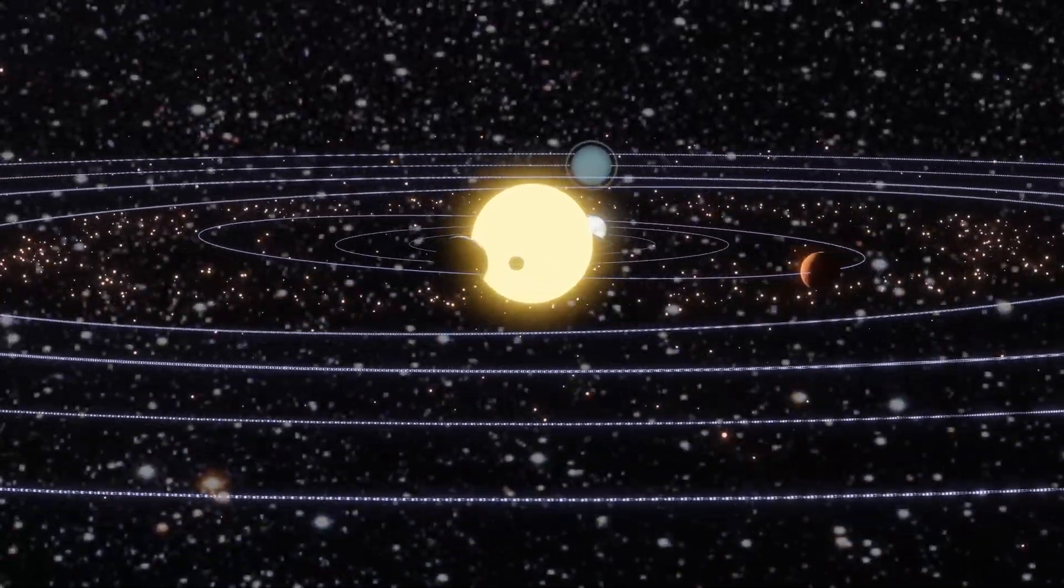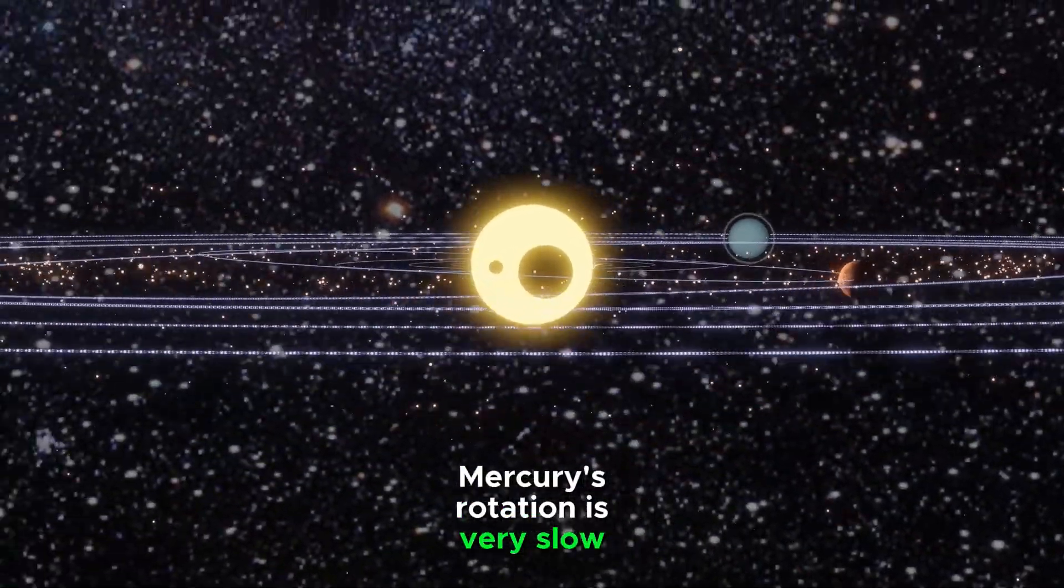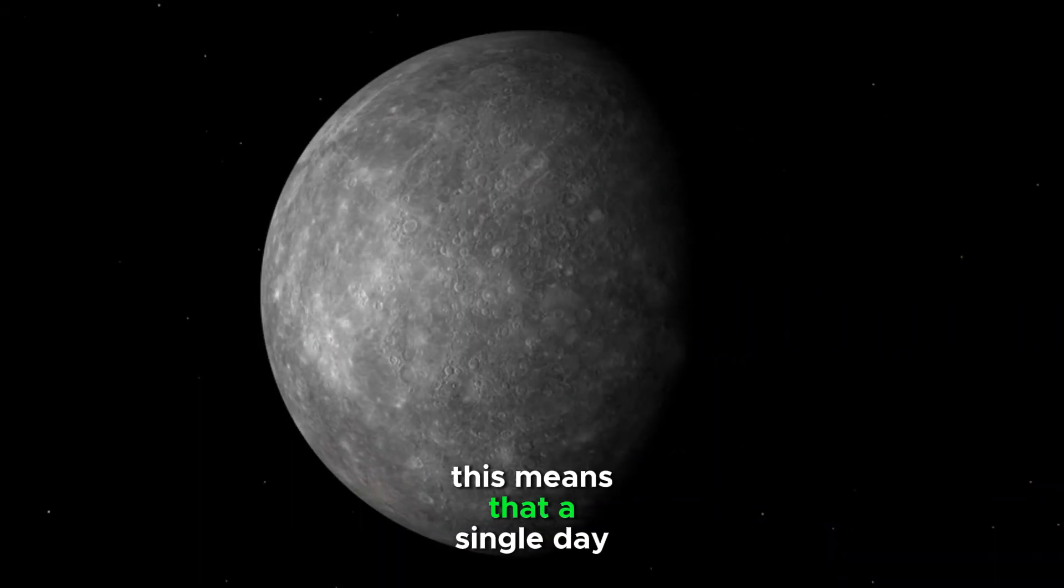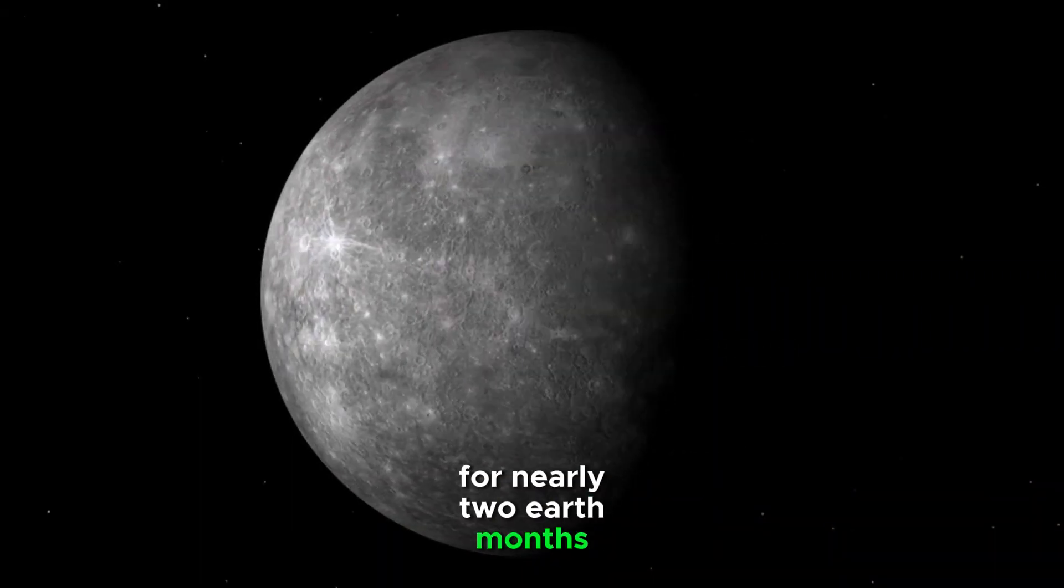A Brutal Day-Night Cycle. Mercury's rotation is very slow, taking 59 Earth days to complete one rotation. This means that a single day on Mercury lasts for nearly two Earth months.